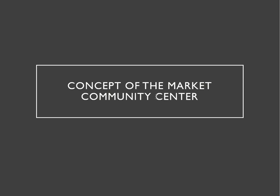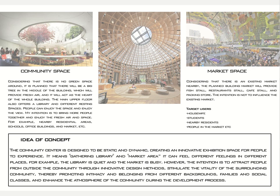For the community, the concept idea is that the community center is designed to be static and dynamic, divided into two categories. It creates an innovative exhibition space for people to experience — including the gathering library and the market area — where people can feel different atmospheres in different places. For example, the library and the center garden are quiet, while the market is busy. The intention is to attract people from outside. The community, through innovative design methods, stimulates the vitality of the community, thereby promoting intimacy and belonging from different backgrounds, families and social classes, and enhancing the atmosphere during the development process.